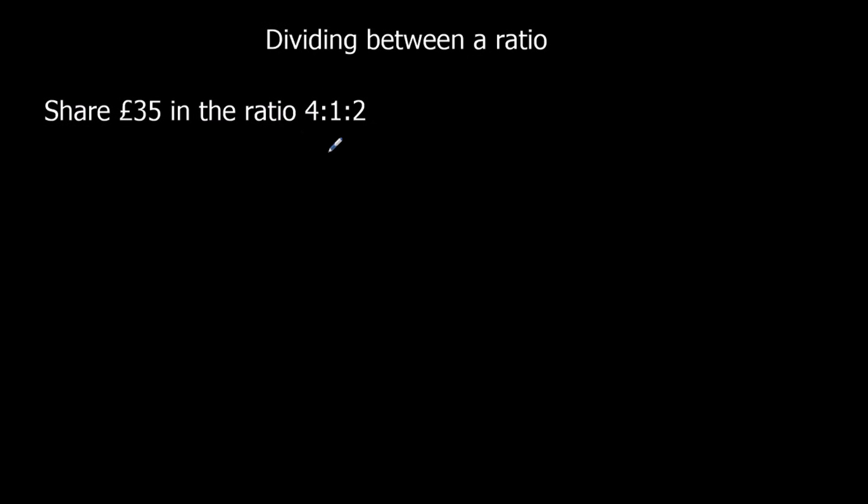Okay, here's a different kind of ratio because there's 3 people involved. So A is going to get 4 parts, B is going to get 1 part, C is going to get 2 parts. So in total, if we've got 4, 1 and 2, there are 7, so there's 7 parts.